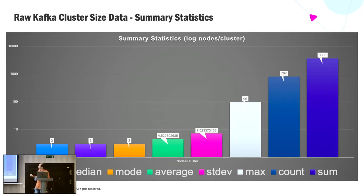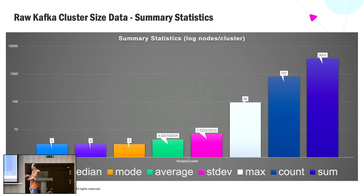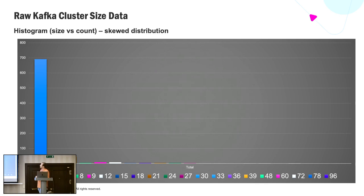What's that got to do with Kafka? This is the summary statistics of all our Kafka clusters that we run for customers. The median cluster size is three, the average is 4.5, with quite a big standard deviation. The maximum cluster size is 96 brokers. There are 797 clusters, and in total 3,603 brokers across all Kafka clusters. The histogram shows the majority of clusters are size three, with perhaps the next most common being size six.